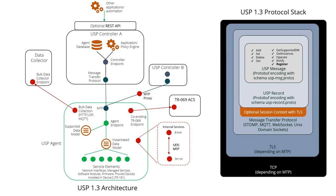On the right you see the protocol stack. These are the basic messages defined in USP: add, set, delete, get, get supported data model — which is very powerful for learning device capabilities, something we didn't really have in TR69 — get instances, operate, notify, and the new register message introduced in USP 1.3, which works with USP services. Everything is encoded in a USP message using protocol buffers, then wrapped in a USP record also in protocol buffers. You have the option of using an end-to-end session context with TLS at that layer — so if going through a brokered MTP like MQTT or STOMP, you can use that session context, or just rely on TLS on the MTP.